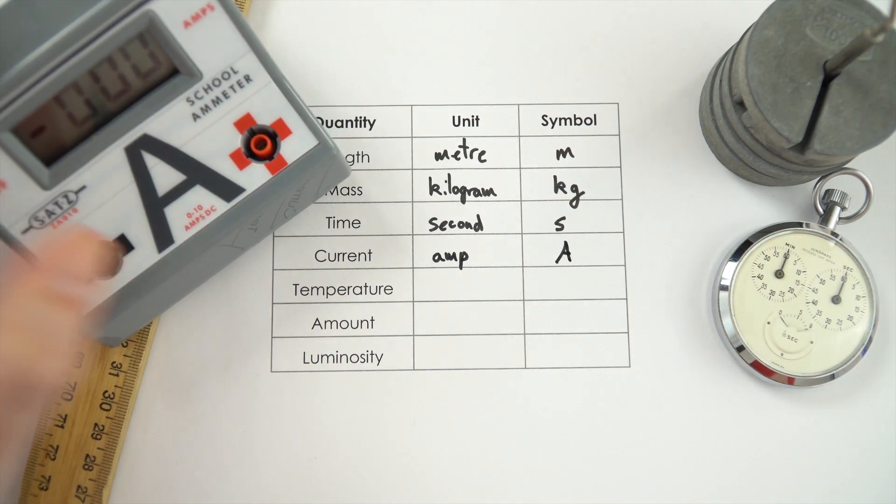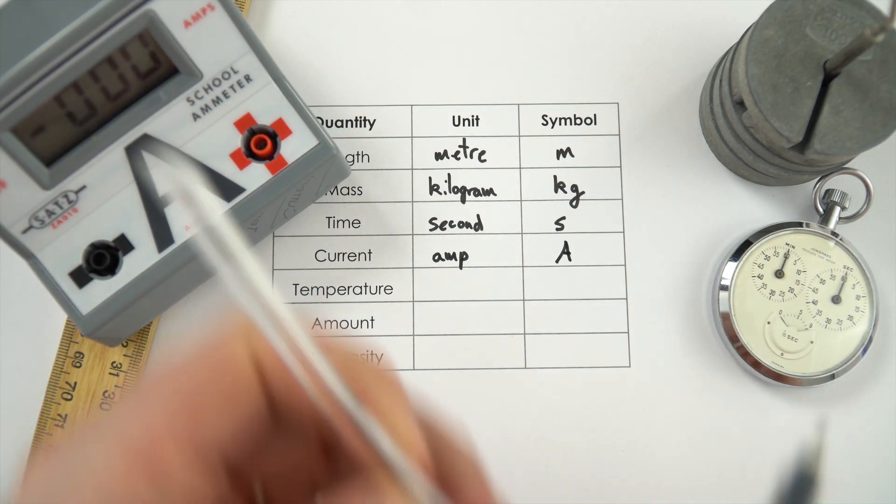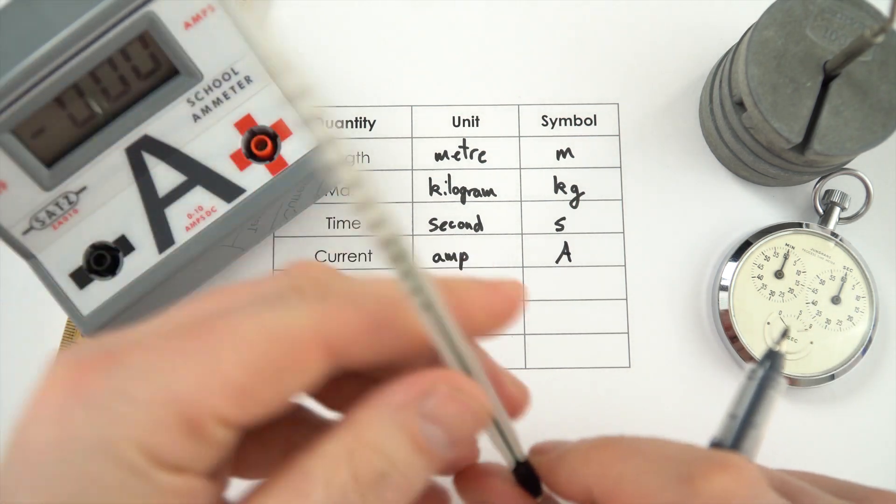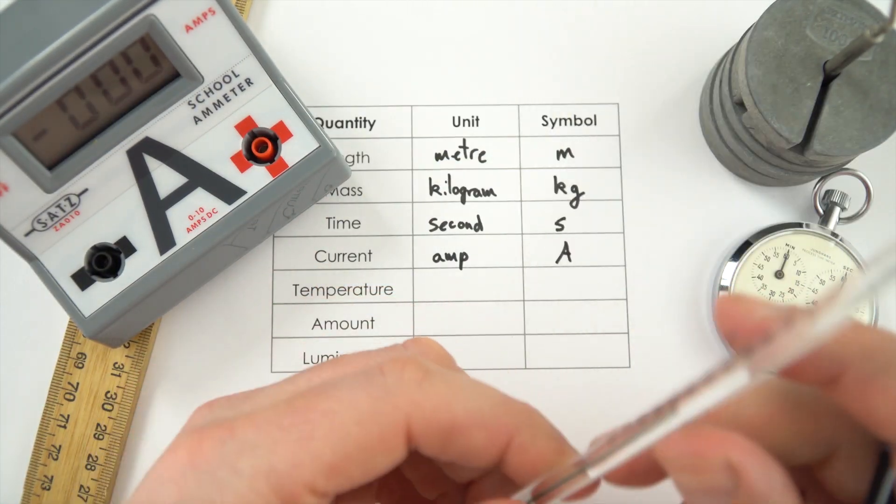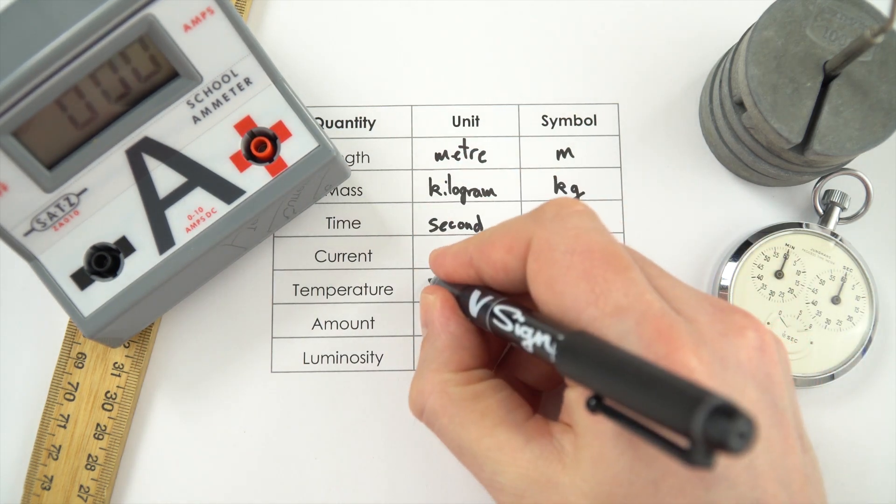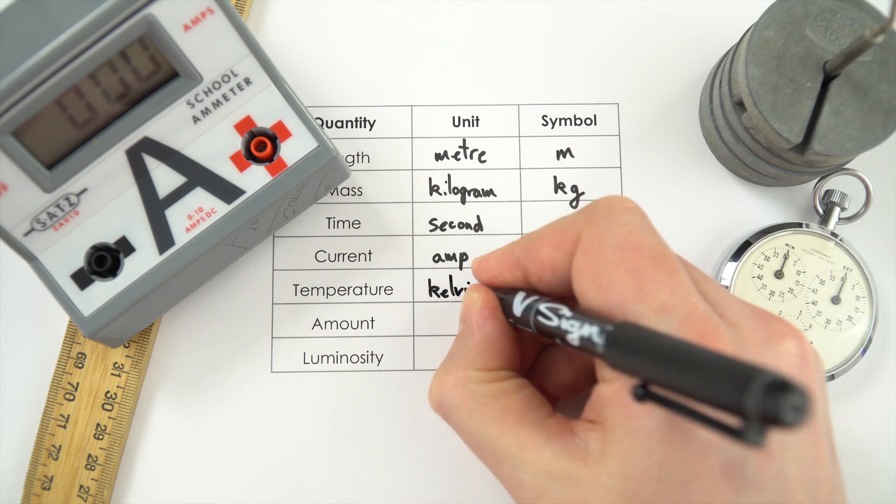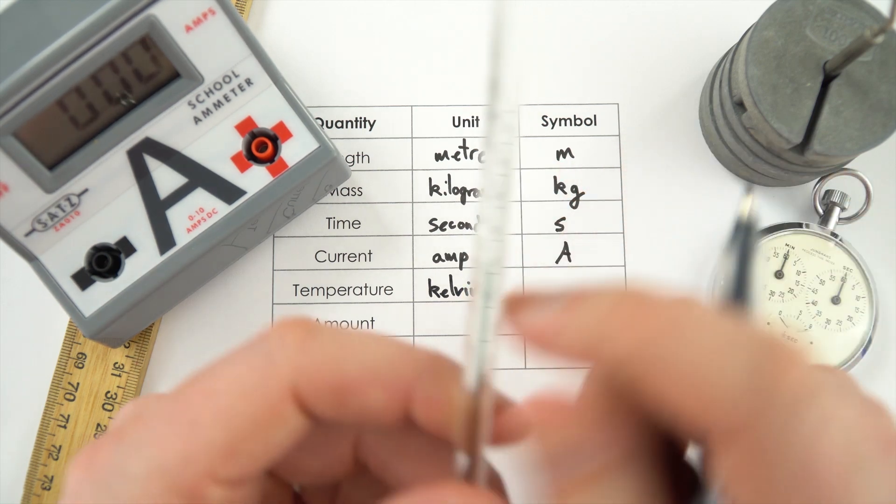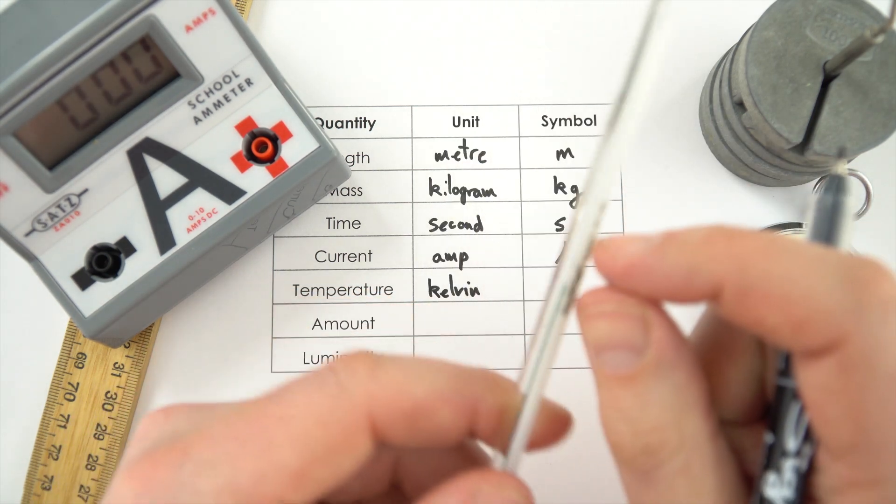We then start to think about temperature and how hot things are. For this we often measure in degrees Celsius because that's what all our thermometers have. But the actual unit that is the base unit for this is called the Kelvin. And the Kelvin scale, one Kelvin is still equal to one degree Celsius.